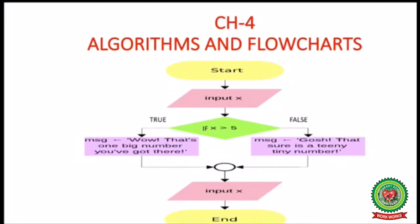Let's discuss this flowchart example. The first instruction is start. The second instruction is input — we give the input number, x. Then there is a decision box: if x is greater than 5. If this condition is true, the message prints 'Wow, that's one big number you've got there.' If the condition is false, the message prints 'Gosh, that's sure a teeny tiny number.' Then there is a connector, followed by another input of x, and then end.